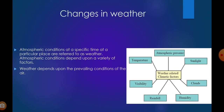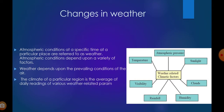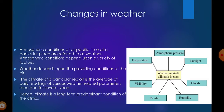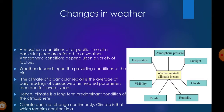Weather depends upon the prevailing conditions of the air. You should know the difference between weather and climate. The climate of a particular region is the average of daily readings of various weather-related parameters recorded over several years. Hence, climate is a long-term predominant condition of the atmosphere — it does not change continuously and remains constant in a region for a long duration.